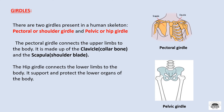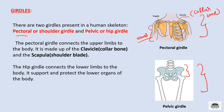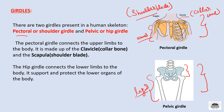Girdles. There are two girdles present in a human skeleton: the pectoral or shoulder girdle, present in the shoulder region, and the pelvic or hip girdle, present in the hip region. The pectoral girdle connects our upper limbs — our arms — to the body. It is made up of the clavicle or collar bone and the scapula or shoulder blade. The hip girdle connects the lower limbs — our legs — to the body, and it supports and protects the lower organs of the body.